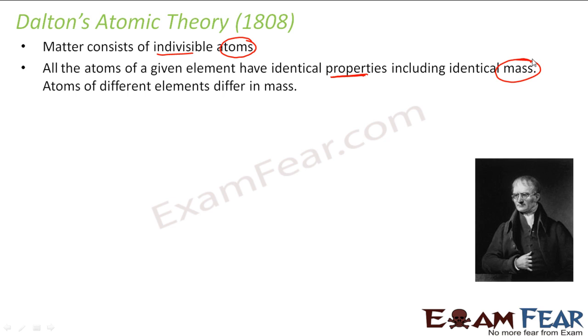Then he told that all the atoms have a given property, property in the sense they have same mass, because this guy is talking about the mass only. Please note, till now in 1808, electron, proton, and neutrons were not discovered. The only thing known was there is something called atom which is not divisible, and he generally used to measure atom by mass.